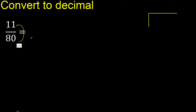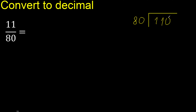11 divided by 80. 11 is less, therefore complete — always complete with 0. Therefore here: 0 point, ok.